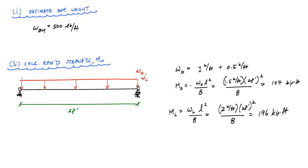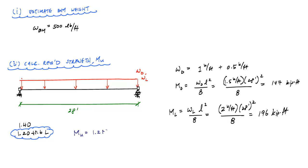Now we have our dead load moment and live load moment effects. We need to use load combinations from the ACI code to find the ultimate load effect MU. The combinations include 1.4·dead and 1.2·dead + 1.6·live, plus others involving wind, earthquake, rain, and snow. In this case there's only dead and live, so the governing combination — since live load is larger — is 1.2·MD + 1.6·ML. The ultimate moment MU = 490 kip-ft.